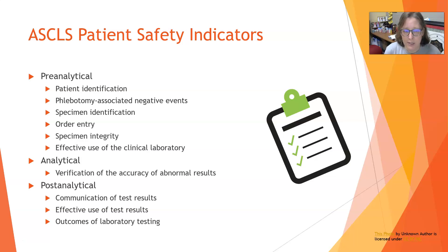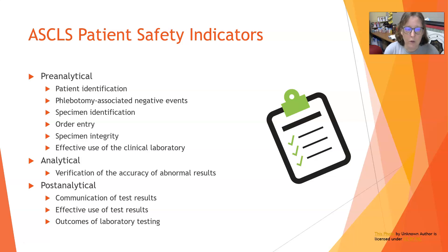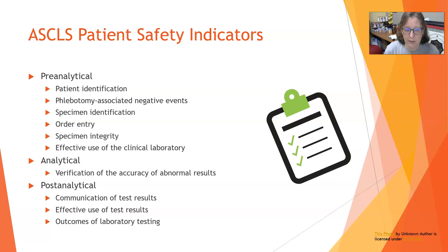Specimen integrity has to do with getting the right amount of specimen — for blood collections, the tube needs to be full. This could also involve losing a specimen, forgetting it, or not storing it at the right temperature. Effective use of the clinical lab means ordering the right test in a timely manner on the patient so we can help the patient and get the answers they need.